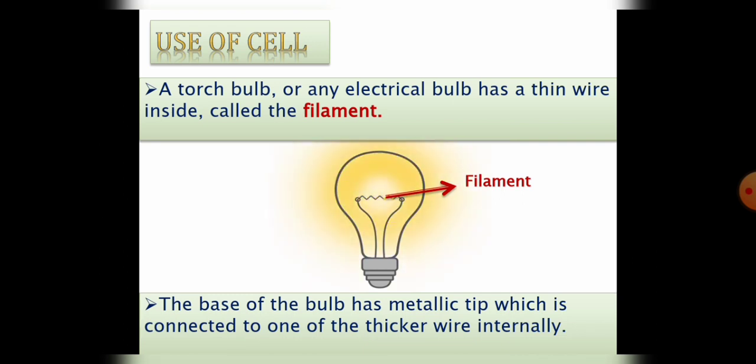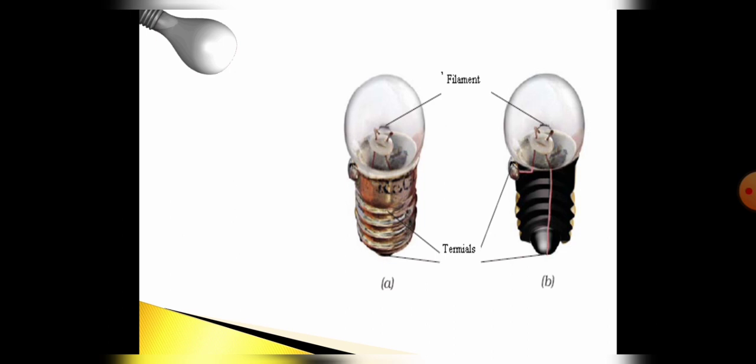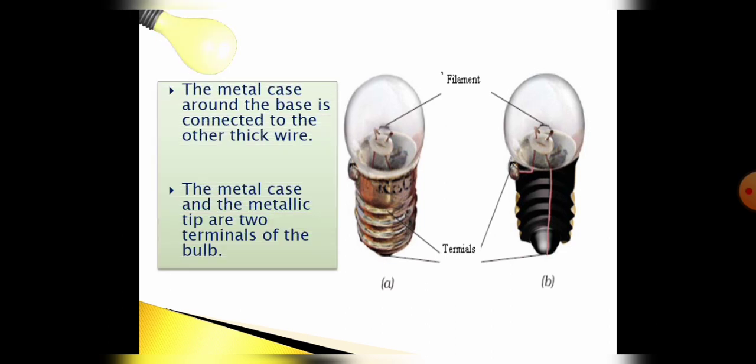Here you can see this part is the base of the bulb, or we can say it is the cap of the bulb. This base is internally connected with wire. Now you can observe bulb at your home also. The metal case around the base is connected to the other thick wire.